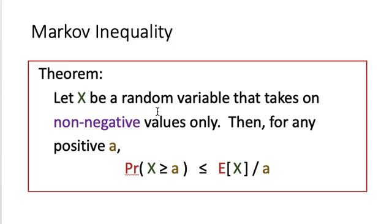If that is not the case, the inequality will not hold. The intuitive meaning is: suppose we have some idea about the value of the expected value of X, then we can use this to show that the chance for X to be very large will not be a lot. As a increases, the chance of X greater than or equal to a will become smaller and smaller.